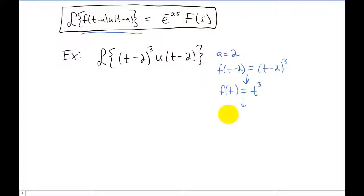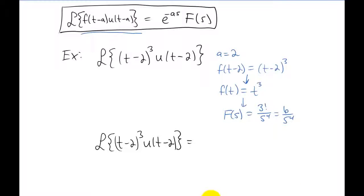And now that we have little f of t, we can take the Laplace transform of little f of t to find capital F of s. So capital F of s in this example is going to be six over s to the fourth power. And now we have everything we need on this right hand side of the formula to get our answer down here.